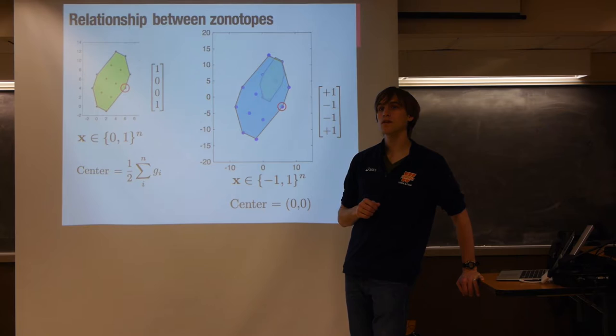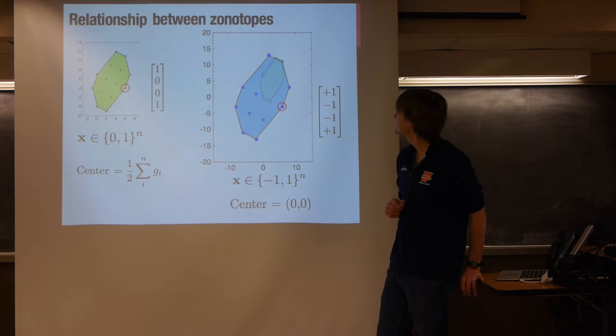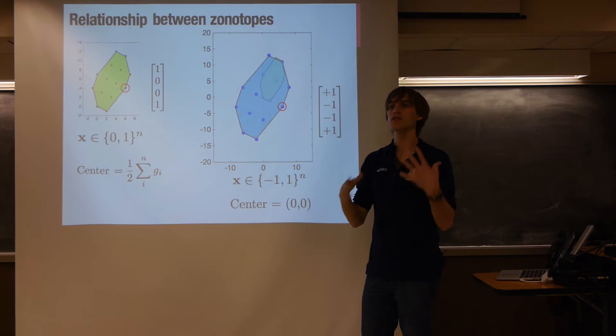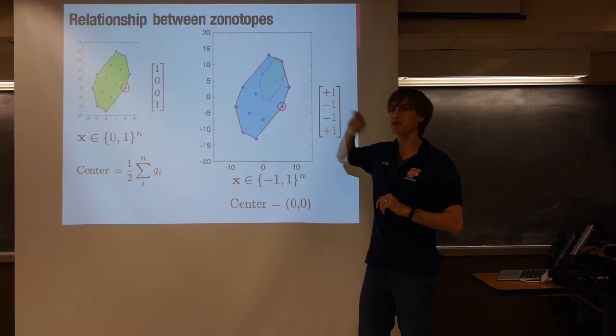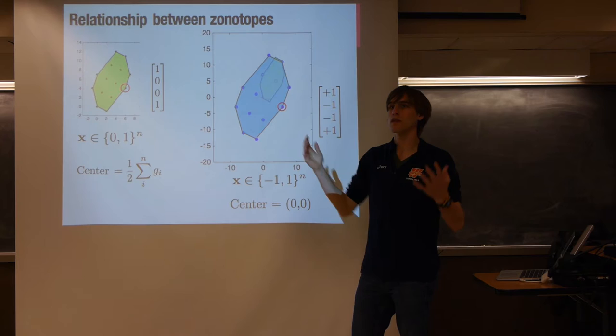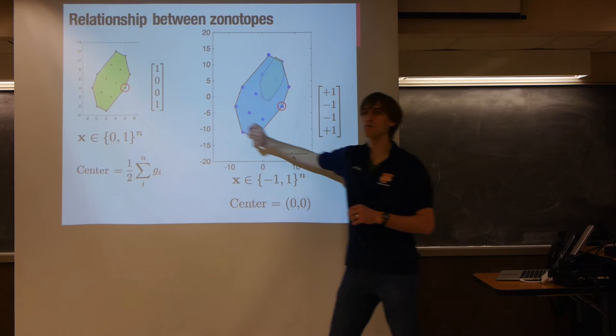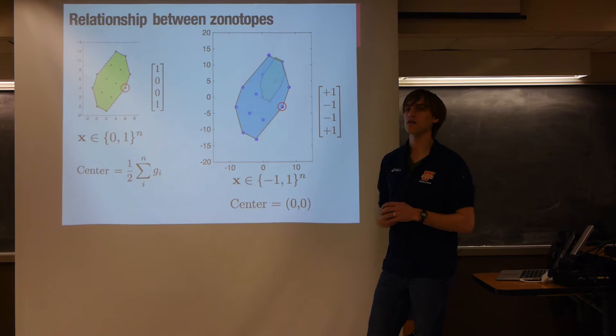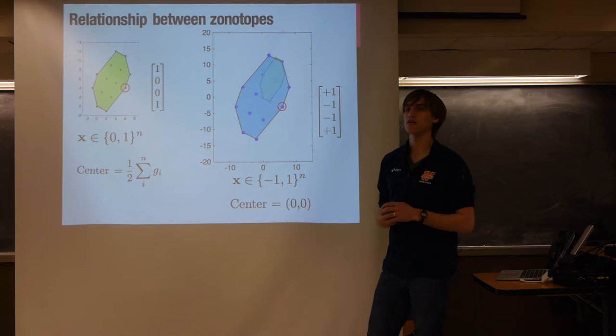An audience member asks: can you do the same thing if instead of 0s and 1s or -1s and 1s you have A's and B's? The speaker says there's no reason you couldn't — you'd still get a polytope with the same basic structure. The reason the literature uses just (0,1) and (-1,1) zonotopes is simplicity. You could generalize, but these are the two forms commonly used in practice.